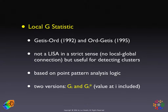The rationale behind the tests is slightly different. Unlike the local Moran, which is based on a cross-product statistic idea, the GI and GI star statistics are based on a point pattern analysis logic, which we'll talk about in a few weeks. The two tests are basically the same except that the GI star includes the value at the location itself in the statistic, whereas the GI statistic does not.